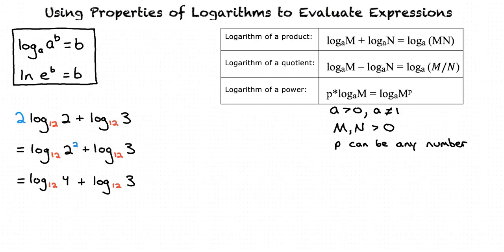We have two logarithms added together with the same base, so we can simplify using the logarithm of a product property. Now we have log base 12 of 4 times 3, which equals log base 12 of 12. This is equivalent to log base 12 of 12 to the power of 1. And from the definition of a logarithm, we can see that this simplifies to 1.